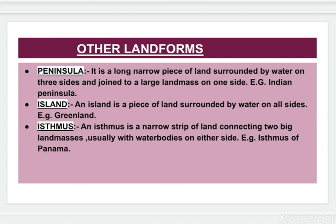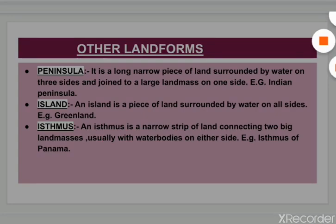Next is island. An island is a piece of land surrounded by water on all sides. Example: Greenland. The last one is isthmus. An isthmus is a narrow strip of land connecting two large land masses, usually with water bodies on either side. Example: Isthmus of Panama.